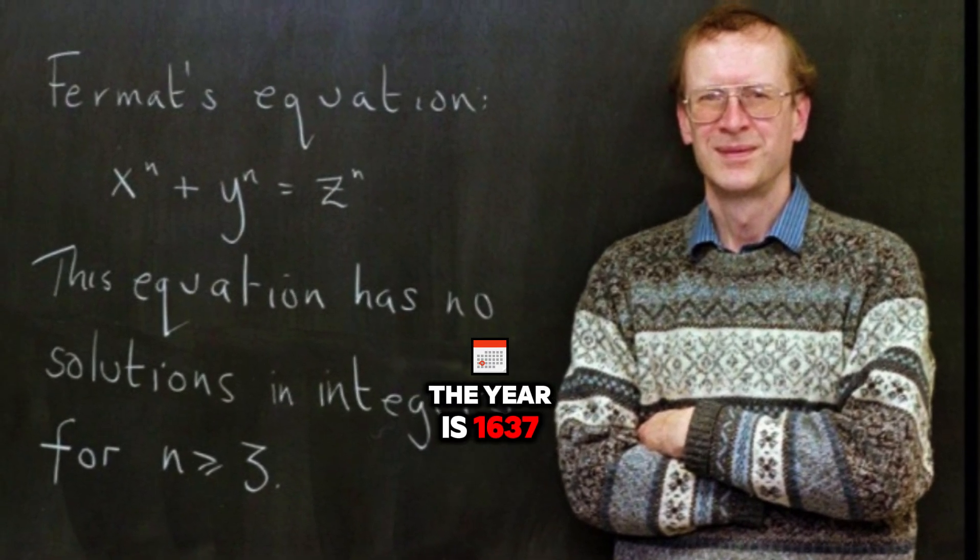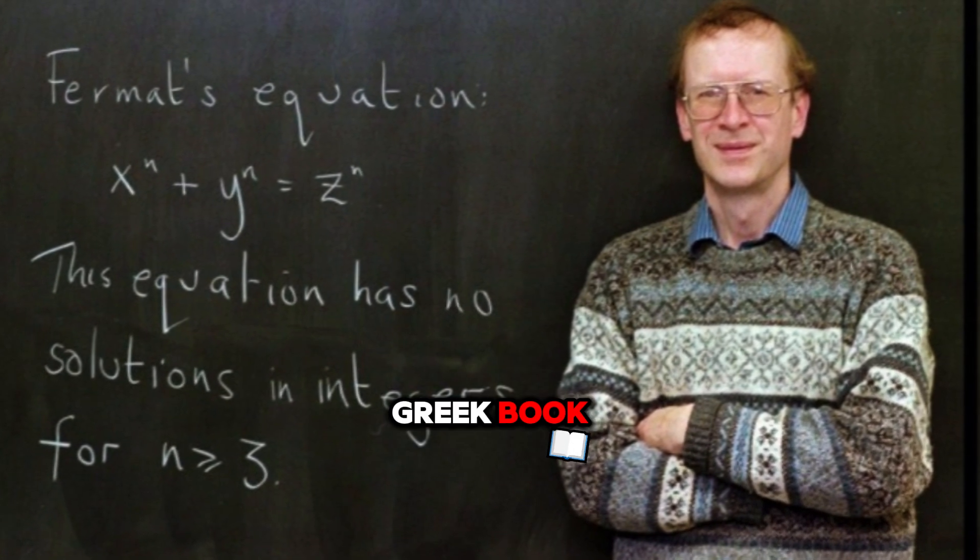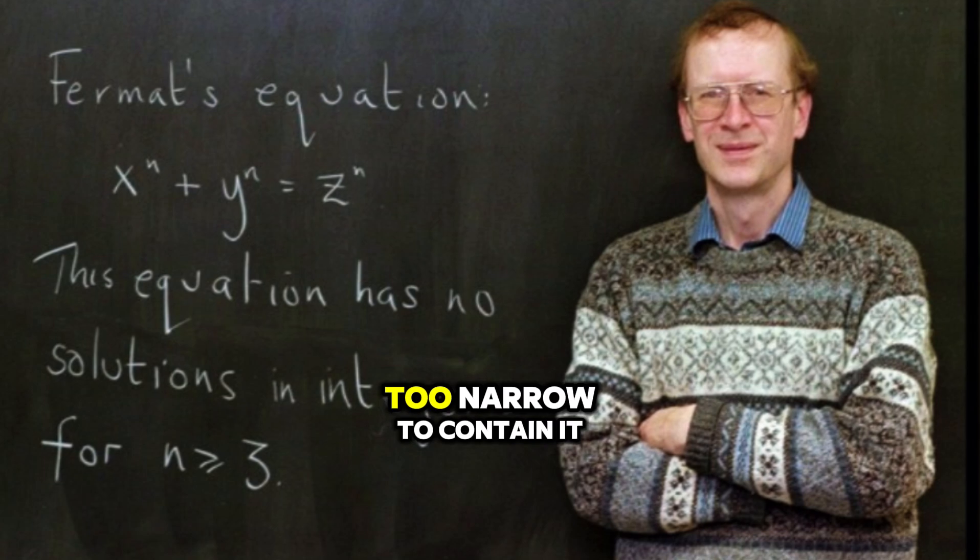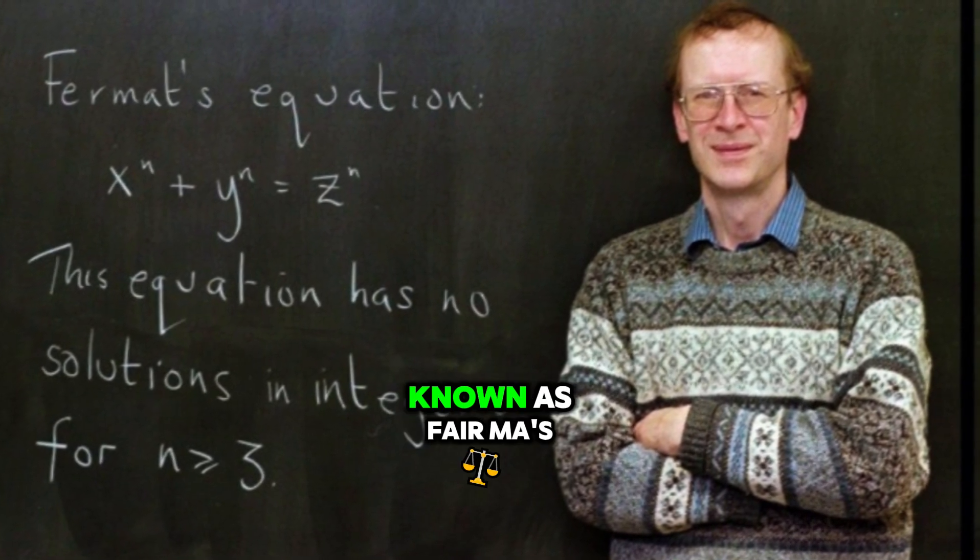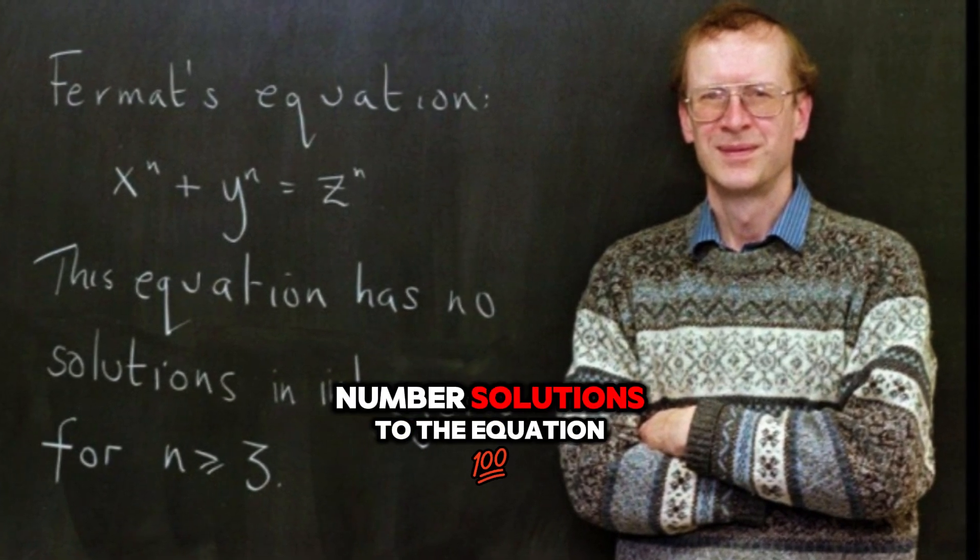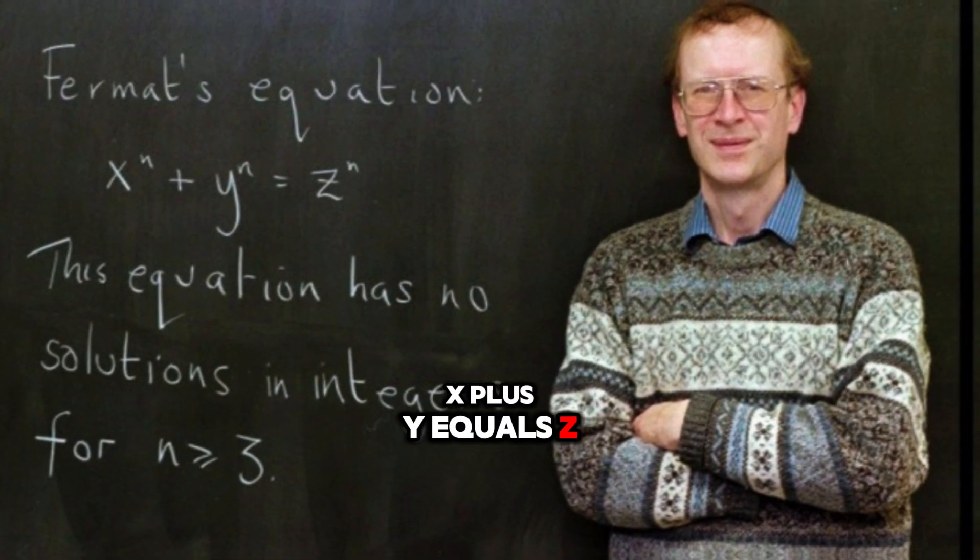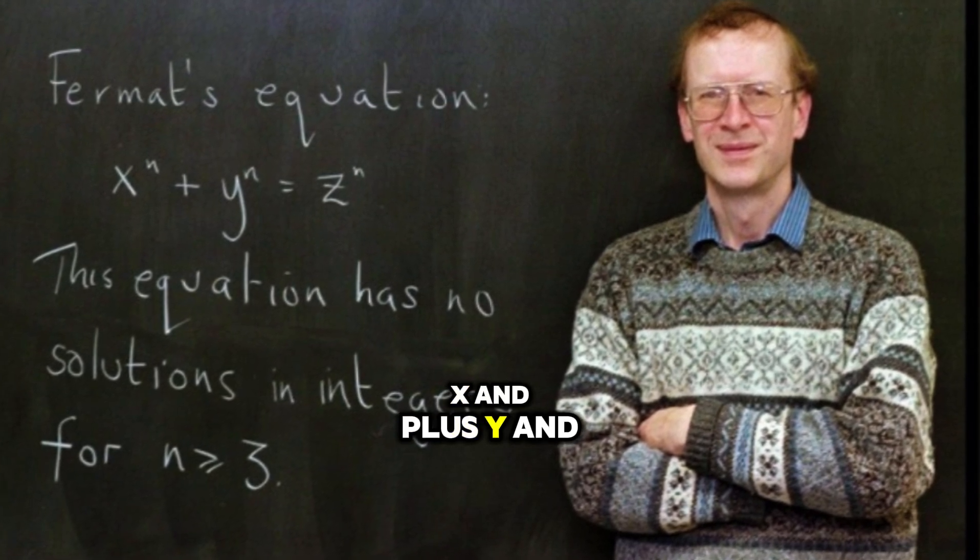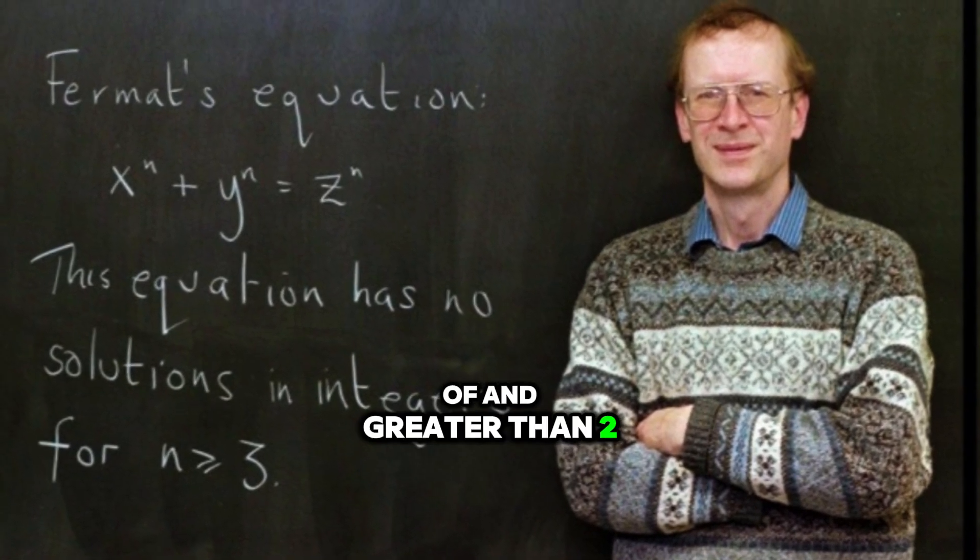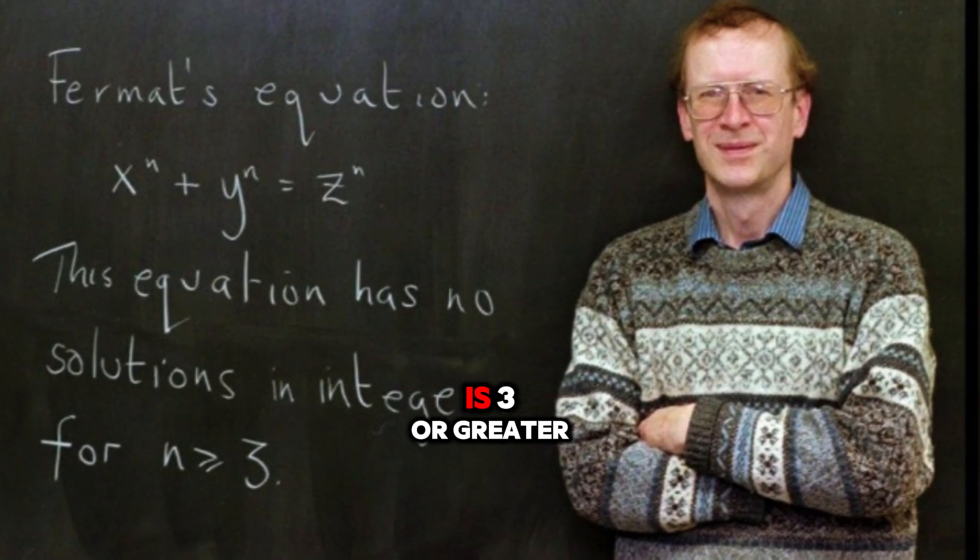The year is 1637. A French mathematician named Pierre de Fermat writes a simple note in the margin of his copy of an ancient Greek book. That note was about a problem known as Fermat's Last Theorem. It seems simple enough. There are no whole number solutions to the equation X to the n plus Y to the n equals Z to the n, for any value of n greater than 2. In other words, it's impossible to find three whole numbers that satisfy this equation if n is 3 or greater.